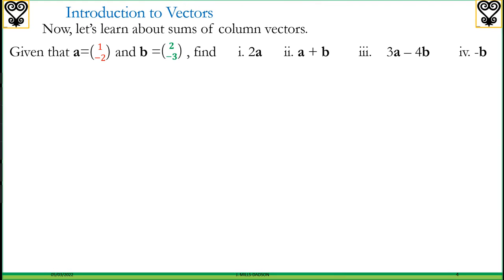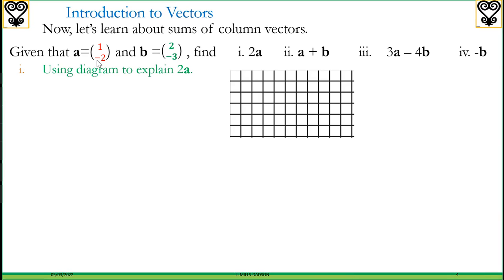We've been given the vectors a and b: a is (1, -2) and b is (2, -3). Let's draw the vector for a (1, -2), so 1 unit right and 2 units down. So the red line represents vector a.